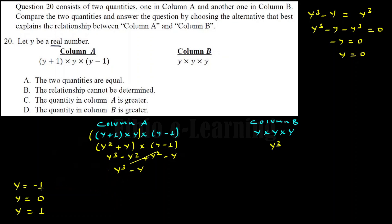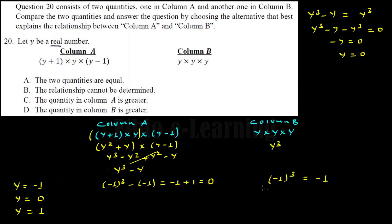When Y is equal to minus 1: Column A gives Y cubed minus Y, substituting minus 1: (-1) cubed minus (-1) equals minus 1 plus 1, which equals zero. Column B gives Y cubed: (-1) cubed equals minus 1. So here zero is compared to minus 1 — they are not equal; zero is greater.